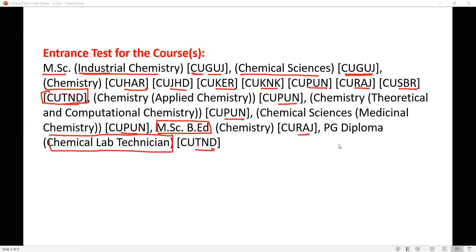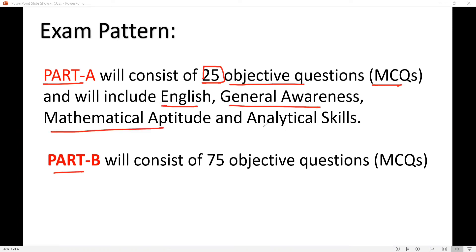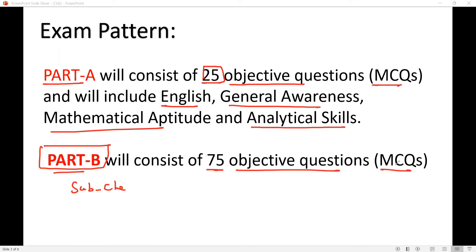Now the next slide shows the exam pattern. The exam has Section One with Part A and Part B. Part A consists of 25 questions — 25 objective MCQ questions — including general language, English, general awareness, mathematical aptitude, and analytical skills. Part B is the subject-specific section.